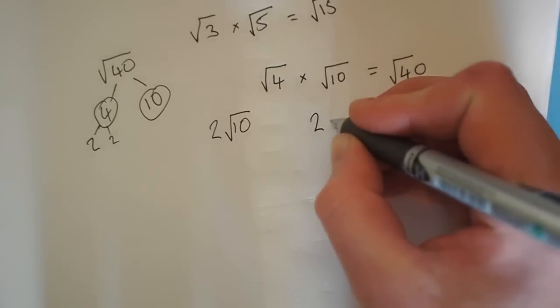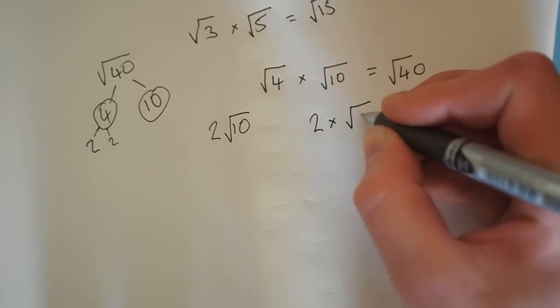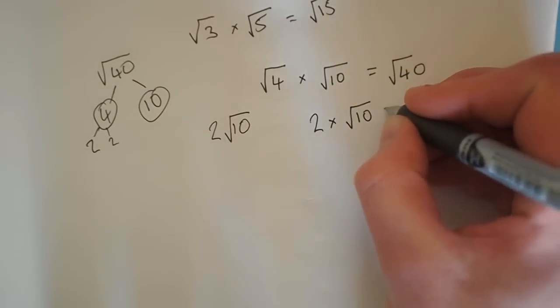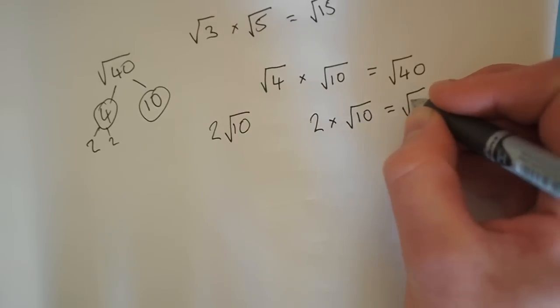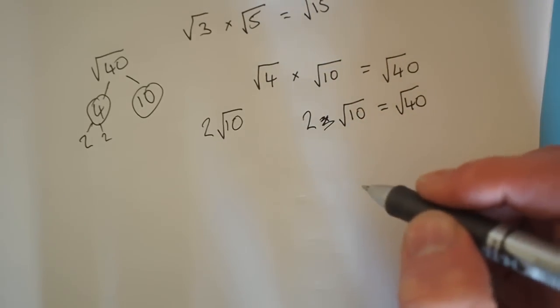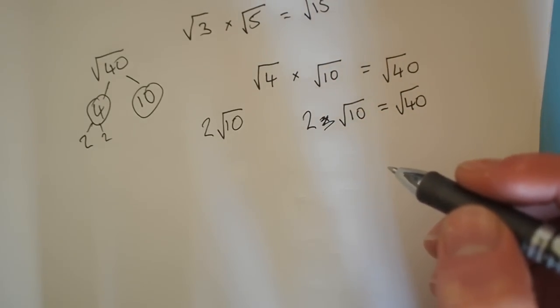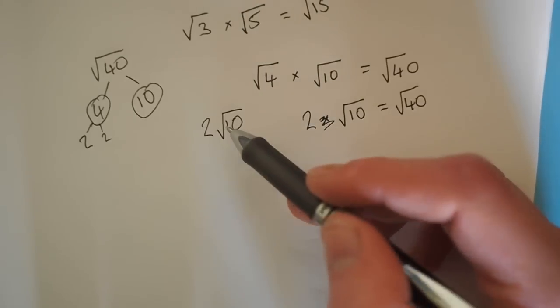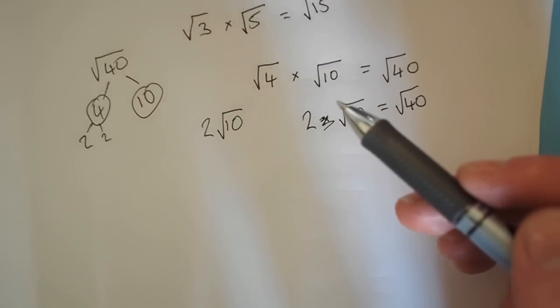So we've got 2 times the square root of 10. And I think you can see where I'm going here. You see that's the same as that. We've just taken away the multiplication sign because you don't need it when doing algebra like this.